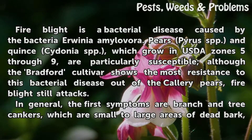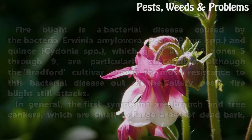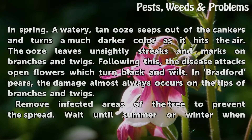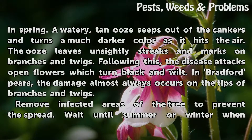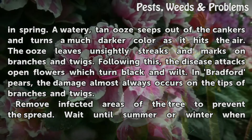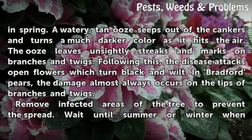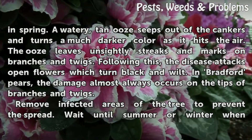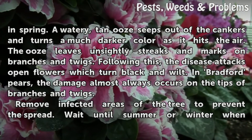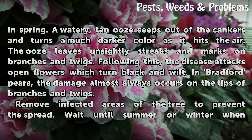In general, the first symptoms are branch and tree cankers, which are small to large areas of dead bark. In spring, a watery, tan ooze seeps out of the cankers and turns a much darker color as it hits the air. The ooze leaves unsightly streaks and marks on branches and twigs. Following this, the disease attacks open flowers which turn black and wilt. In Bradford pears, the damage almost always occurs on the tips of branches and twigs.